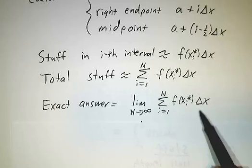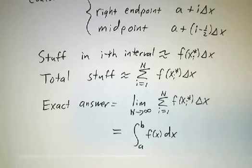So the exact answer is the limit as n goes to infinity of this sum. This thing's called a Riemann sum. And that, by definition, is the integral from a to b of f dx.